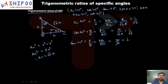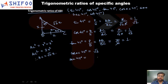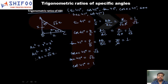So sin 45 and cos 45 are both equal to 1/√2, and tan 45 equals 1. The reciprocals give cosec 45 = √2, sec 45 = √2, and cot 45 = 1. These are the trigonometric ratio values for 45 degrees.